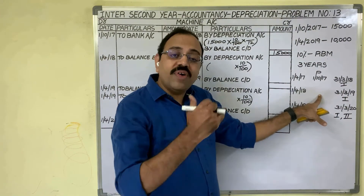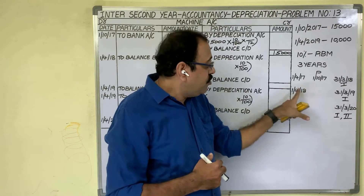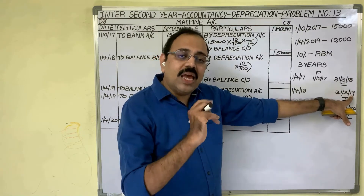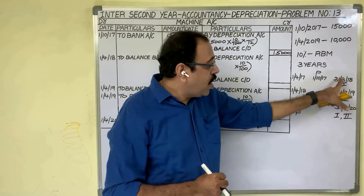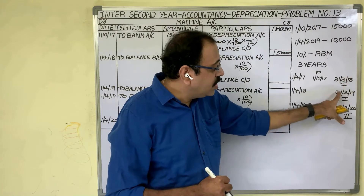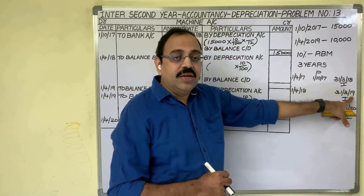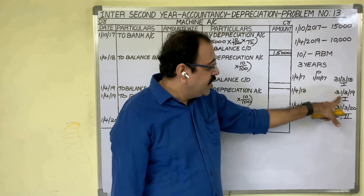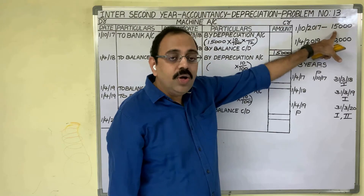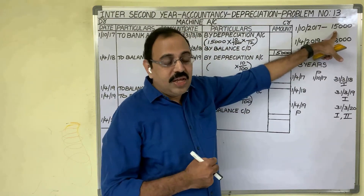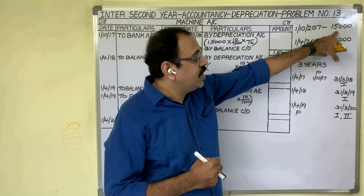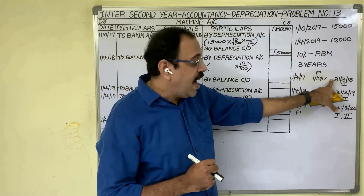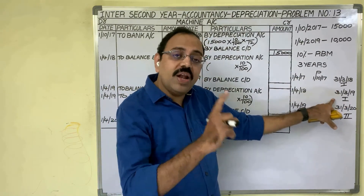So in the first year, the 15,000-rupee asset was used for only six months. In the second year (2018–19), there is no further purchase, so the firm has the same asset from 1st April 2018 to 31st March 2019 — the full year. Therefore, on the 15,000-rupee asset, depreciation is provided for six months in Year 1 and for twelve months in Year 2.